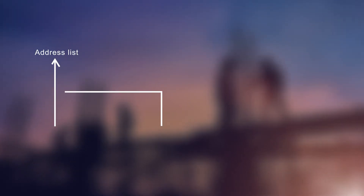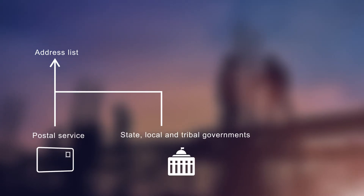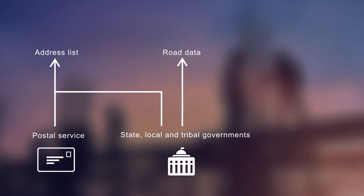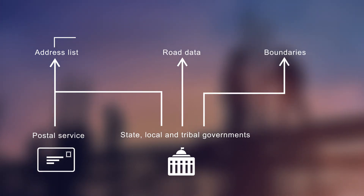Going through the data integration process and looking at the sources for where we get that data — in the case of the address list, it comes from the postal service as well as from state, local, and tribal governments. The road data also comes from state, local, and tribal governments. And the boundaries come from state, local, and tribal governments as well.